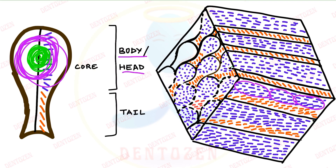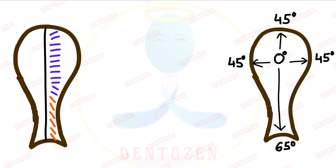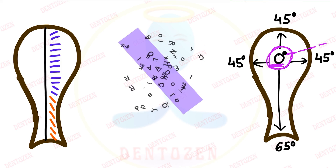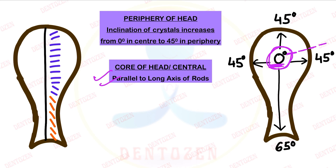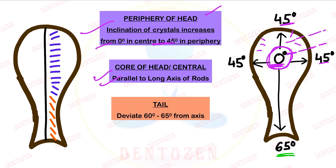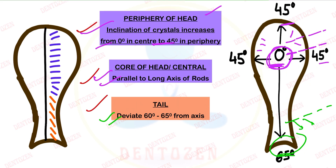Crystal orientation in the three areas: in the central part or core of the body or head, crystals are parallel to the long axis — arranged at zero degrees. At the periphery of the head, crystals are at 45 degrees to the long axis. In the tail region, crystals are at 65 degrees to the long axis. This three-region crystal arrangement is an important entrance or viva question.